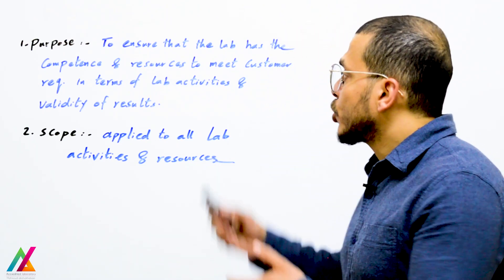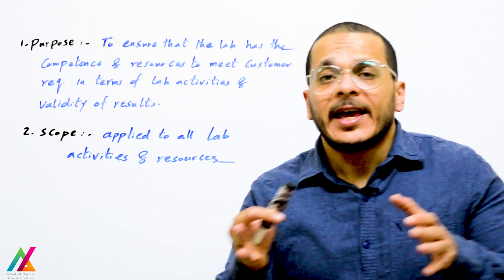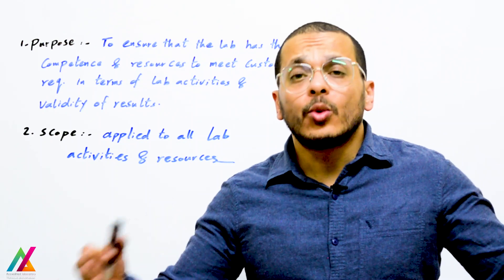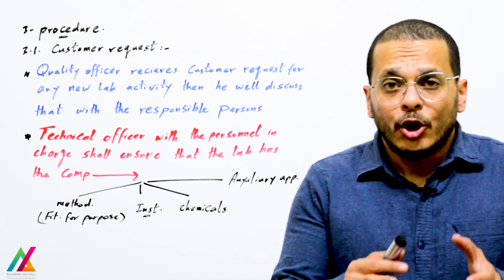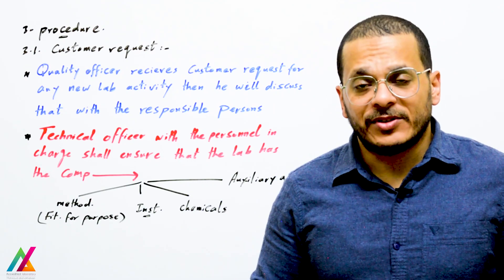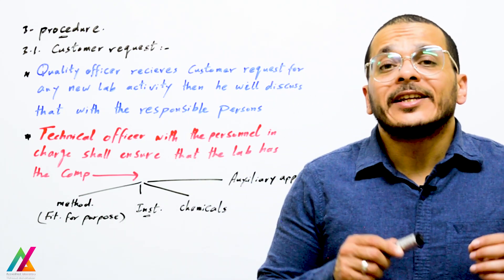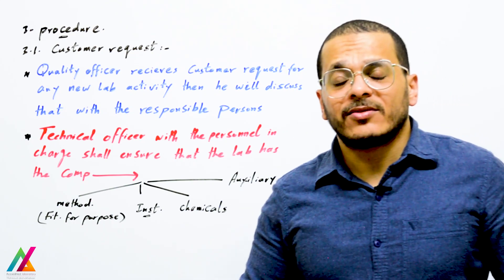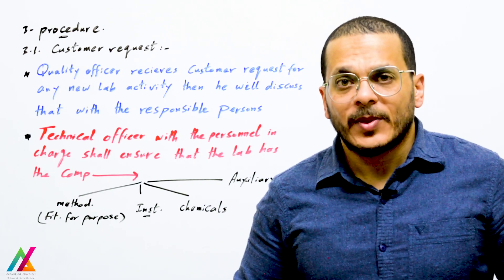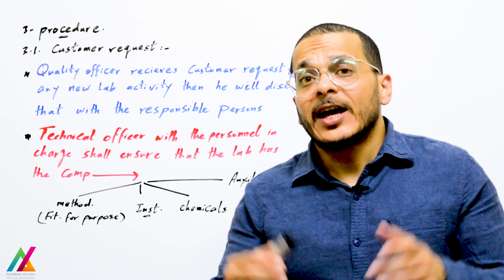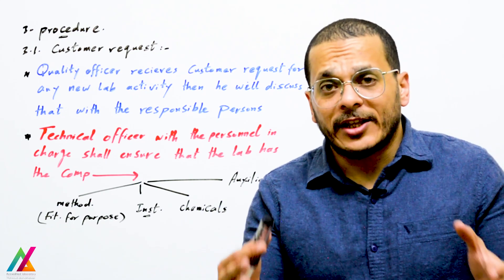You shall prepare a procedure for review of requests, tenders, and contracts. The purpose of this procedure is to ensure the lab has the competence and resources to meet customer requirements in terms of lab activities and validity of results. The scope applies to all lab activities and resources inside the lab. In the procedure, the first point is the customer request: the customer requests the lab to perform a new lab activity to analyze specific parameters in a specific matrix. The quality officer or quality manager receives the request and sends it to the technical lead of the relevant unit, who ensures the lab has the competence and resources to perform this activity.